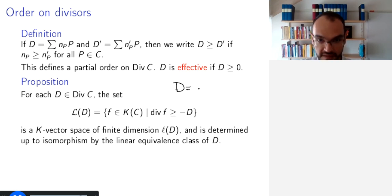So, for example, if our D is, say, 3P1 minus 6P2, then minus D is minus 3P1 plus 6P2. And so, saying that the divisor of the function is greater than or equal to minus D means that we are allowing a pole of degree at most 3 at P1, and we require a zero of degree at least 6 at P2.